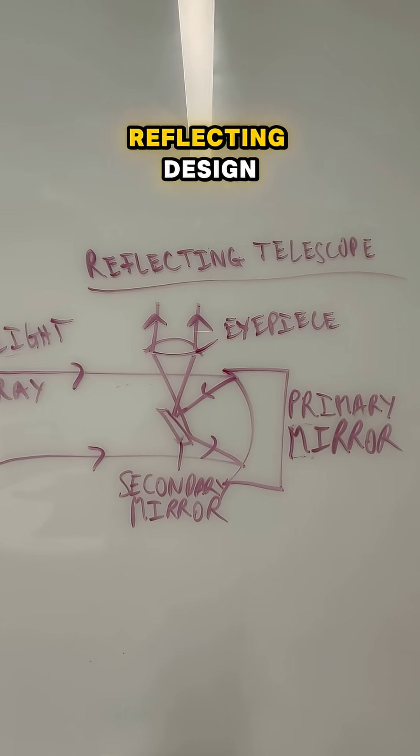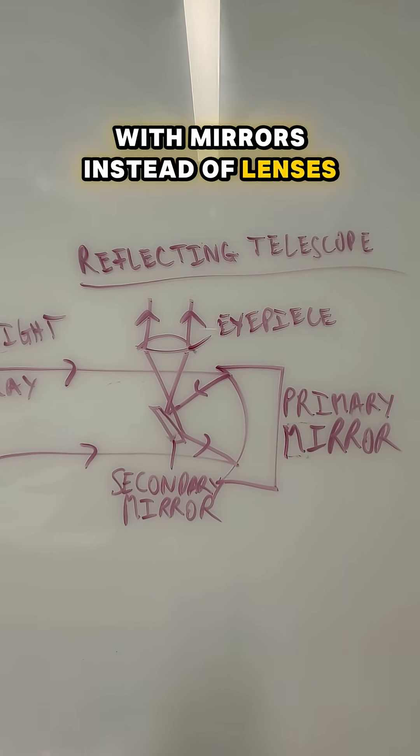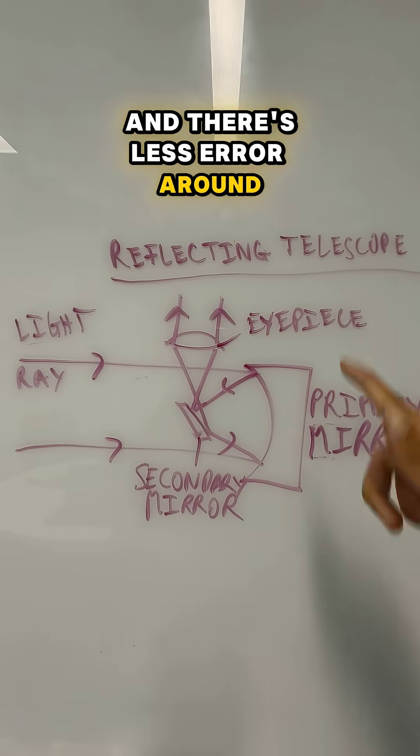Most modern telescopes use a reflecting design with mirrors instead of lenses, as less light is wasted and there's less error around the edges.